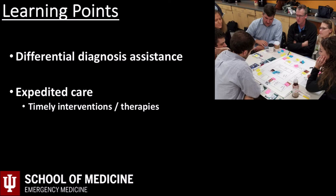By identification of what was felt to be a symptomatic aneurysm with impending rupture, the treatment team was able to engage vascular surgery, start vasoactive medications, and order appropriate follow-up imaging while preparing the patient for operative intervention. This patient's pathology represents a serious emergent condition in which a timely diagnosis can greatly impact morbidity and mortality.